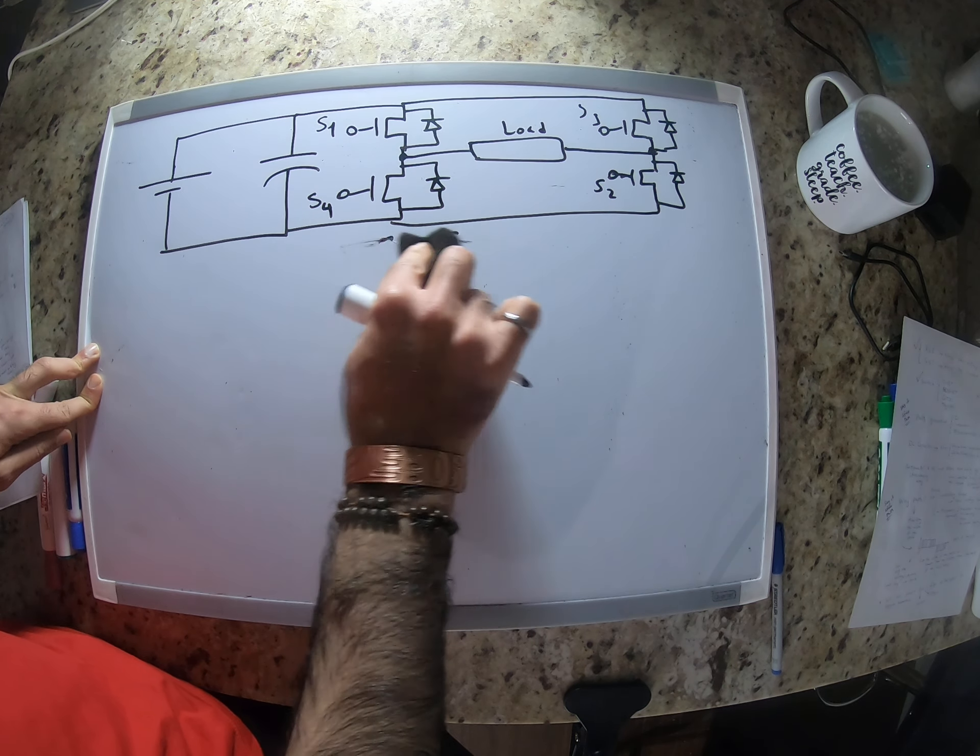0, 0 means S2 and S4 are going to be on. In this case, if S2 and S4 are on, what's the voltage? It's going to be 0. 0 and 1 means that S4 is on because S1 is off, S4 is on, and S3. So we have S3 and S4. In that case, we would have negative VDC.